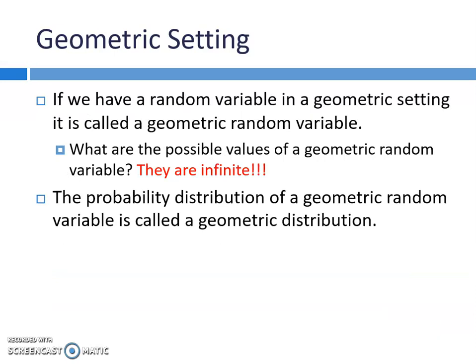If we have a random variable in a geometric setting, it is called a geometric random variable. What are the possible values of a geometric random variable? They are infinite. This is different than binomial — in binomial we said we're only doing this so many times. In geometric, you could keep going and going until you get success; you might never even get a success. It is possible. For instance, how long is it going to take me to kick a field goal? It might never happen. So it's infinite, which means we probably wouldn't actually graph this because you can't make a histogram of something that goes on forever. The distribution is called a geometric distribution.